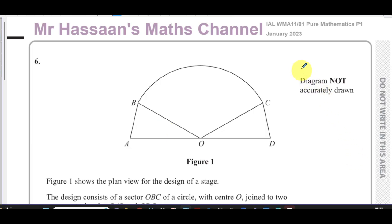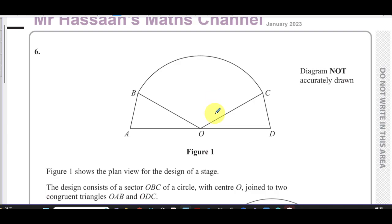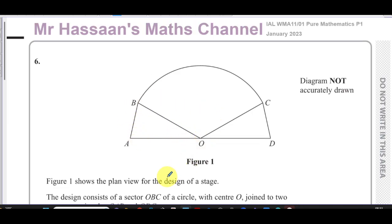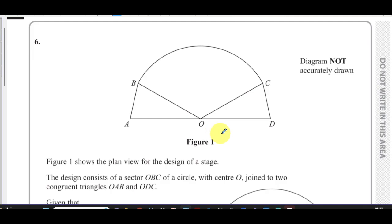This is Mr. Hassan's Maths channel. I'm now answering question number six from the January 2023 Pure Mathematics P1 International A-level Edexcel exam. This question is about radian measure. Figure one shows a plan view for the design of a stage. The design consists of a sector OBC with centre O, joined to two congruent triangles OAB and ODC.